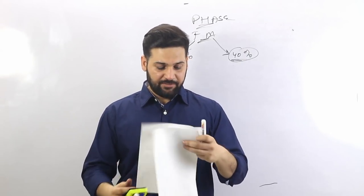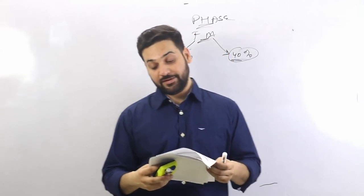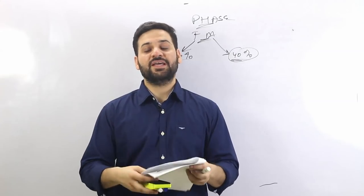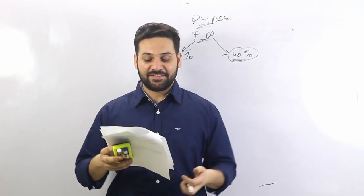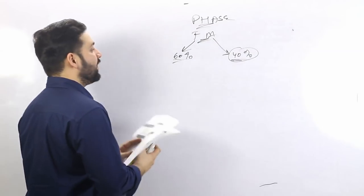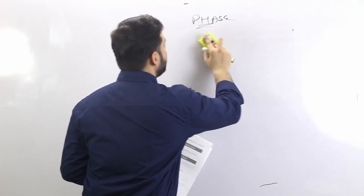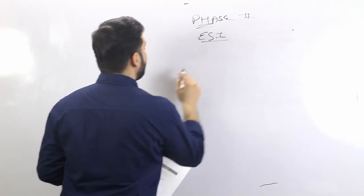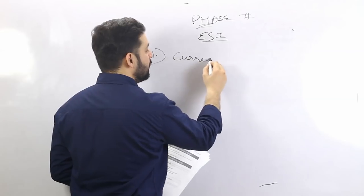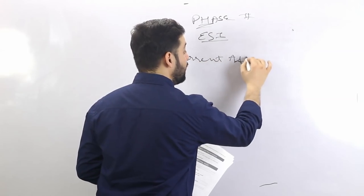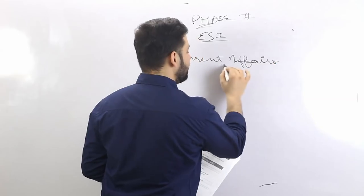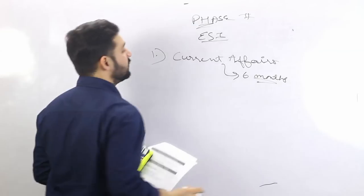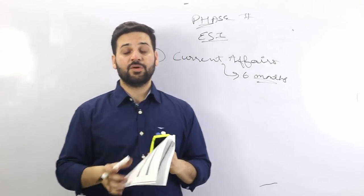Let's talk about the ESI — Economic and Social Issues paper. A lot of students are confused about what to read for ESI. The first thing to follow is current affairs. Previous six months of current affairs is enough.